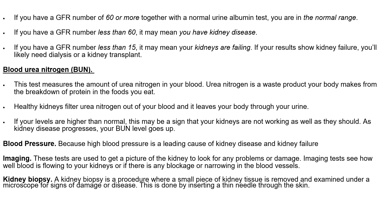Another test is the blood urea nitrogen test, which measures the amount of urea nitrogen in your blood — a waste product from the breakdown of protein. Healthy kidneys filter urea nitrogen out of your blood and it leaves via urine. If kidney levels are higher than normal, it indicates your kidneys are not working well, and as kidney disease progresses, your BUN levels go up. Blood pressure is also measured because it is a leading cause of kidney disease and failure. Imaging tests are undertaken to see what your kidney looks like, check for damage, and assess blood flow and blockages. A kidney biopsy may also be performed, where a small piece of tissue is removed via a thin needle and examined under a microscope.